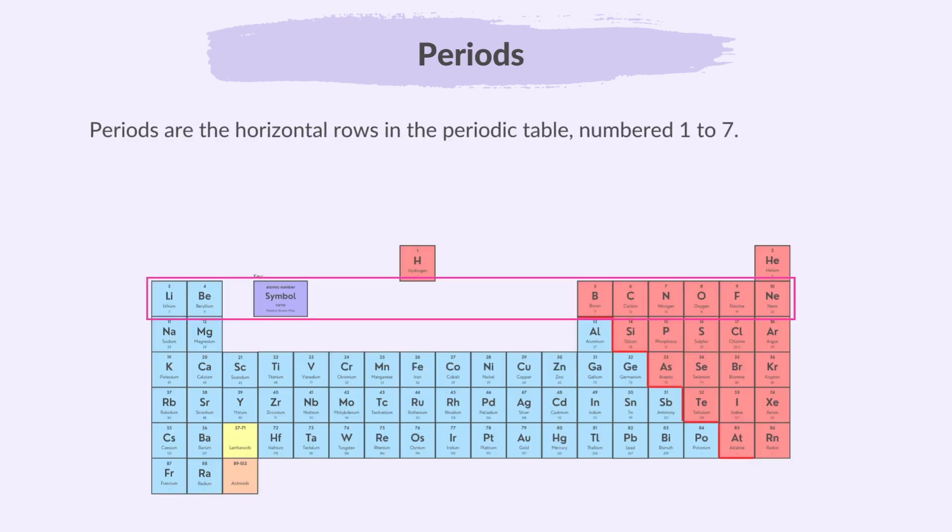Periods are the horizontal rows in the periodic table, numbered 1 to 7. The period number indicates the number of electron shells an atom has.